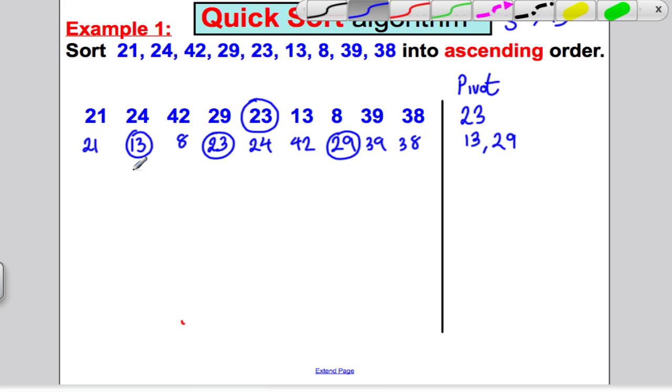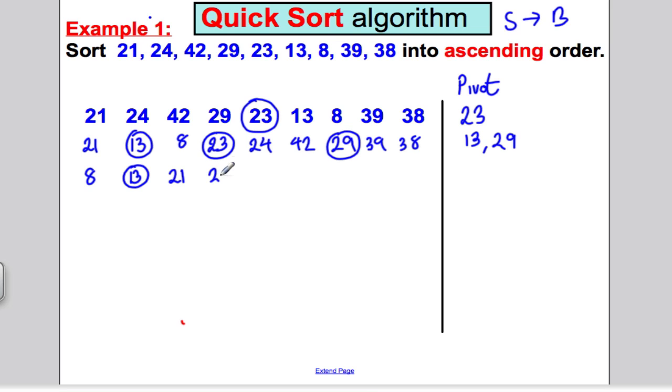Out of these three, I'm going to write down anything that's smaller than 13. So that's eight. Then I'm going to write my 13 down because that's the only thing left. And then write down anything bigger than 13, which is 21. I'm going to write my 23, which is pivoted. Out of these five here, write down anything smaller than 29. So that's simply the 24. Then I'm going to write my 29, which was pivoted. Then I'm going to write the ones that are bigger in the order they came. So 42, 39, and 38.